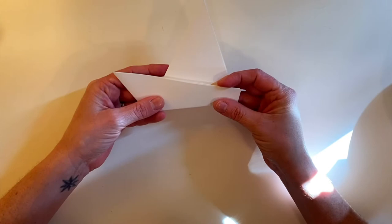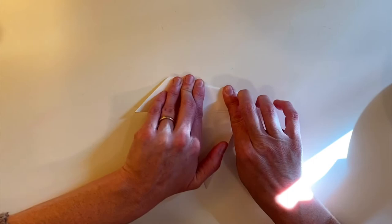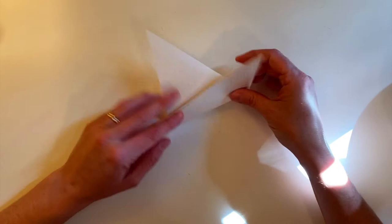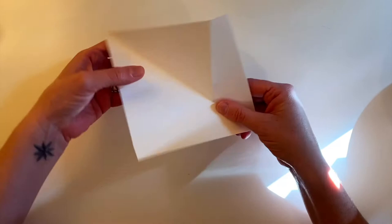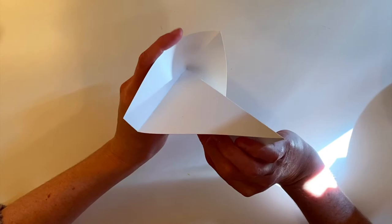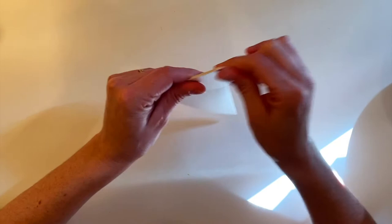Unfold it and then refold it the opposite direction. And press on that crease again. Now unfold it, open it and press it out like this. And then refold it. So now your boat can actually stand on its own.